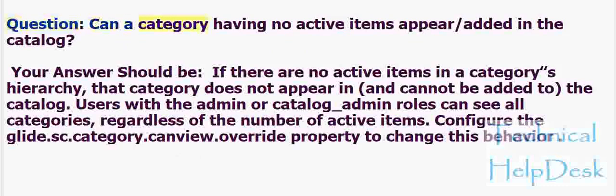Question: Can a category having no active items appear or be added in the catalog? If there are no active items in a category's hierarchy, that category does not appear in, and cannot be added to, the catalog. Users with the admin or catalog_admin roles can see all categories, regardless of the number of active items.